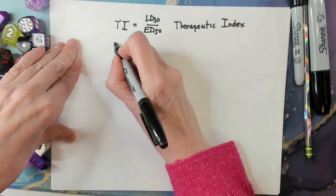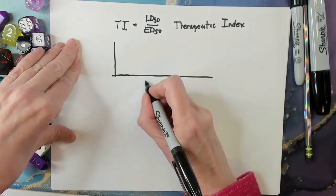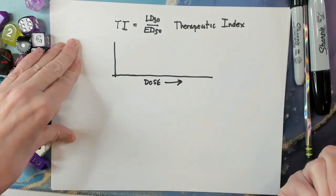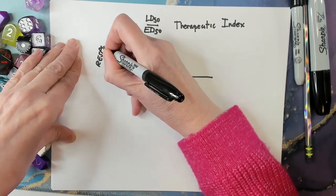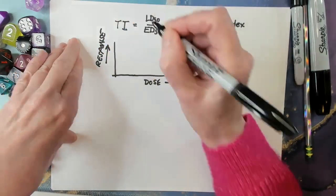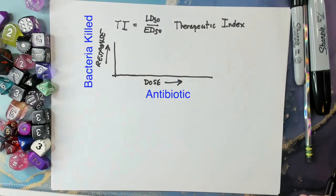So therapeutic index has to do with the dose-response curve. The dose-response curve is increasing dose on the x-axis versus the response to the drug. The response is something like, if it's pain, it's the amount of pain relief. If it's an infection, it's the amount of infection that is fixed by an antibiotic.